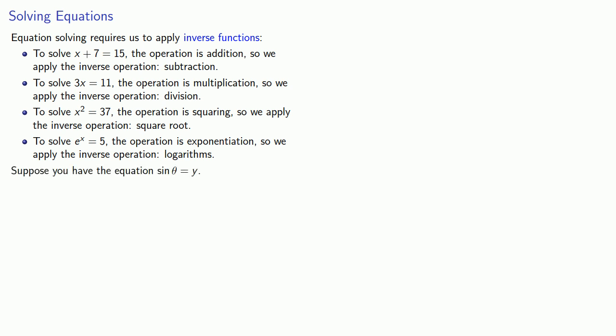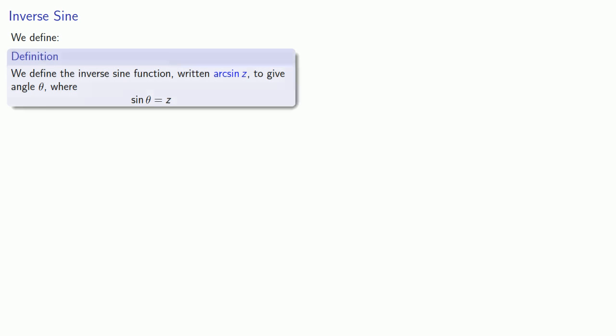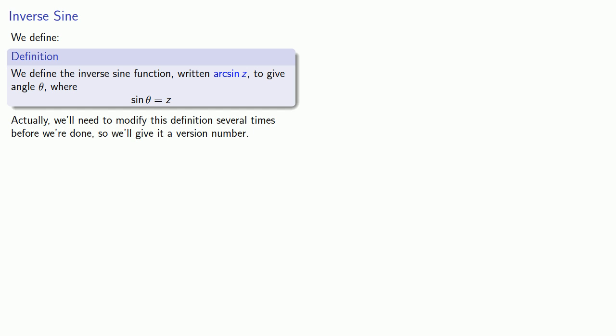Suppose you have the equation sine of theta is equal to y. To solve it, you'd need the inverse sine operation. Let's get into the mind of a mathematician — don't worry, it's not too scary a place — and define the inverse sine function, which we'll write as arc sine z, to give the angle theta where the sine of theta is equal to z. We'll need to modify this definition several times, so we'll call this version 1.0.